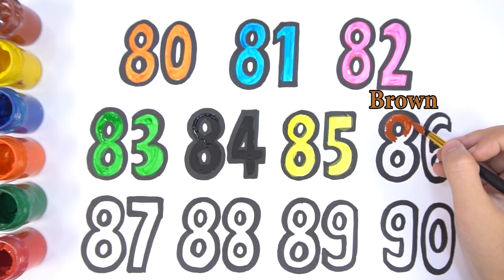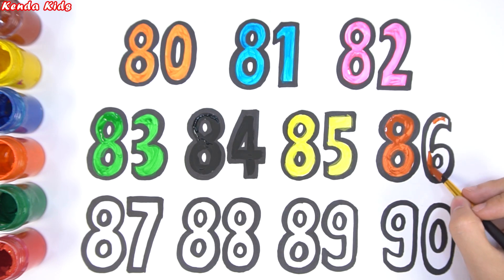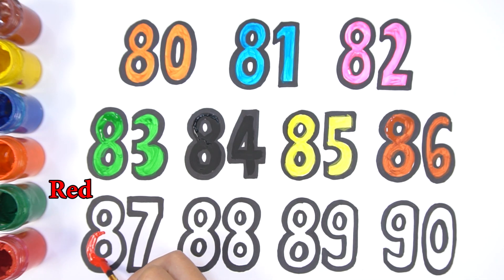Then brown color for 86. Number 87 is red color.